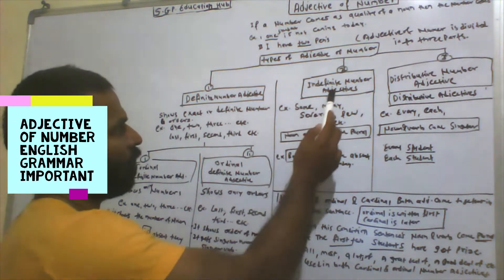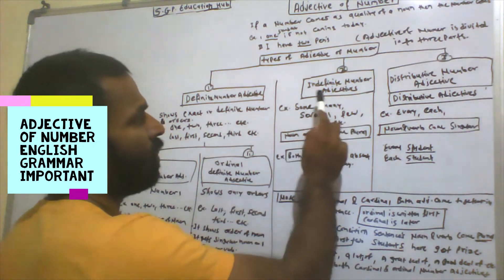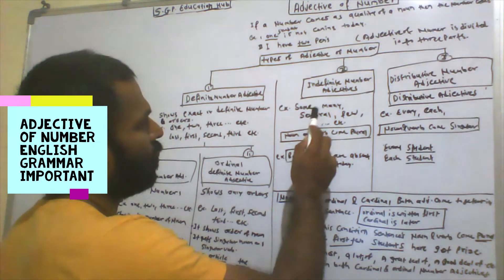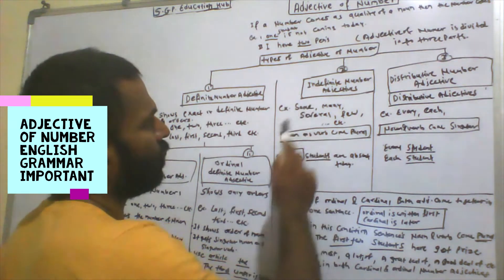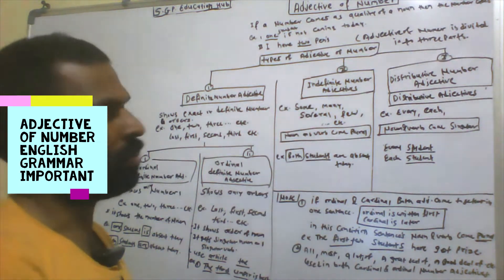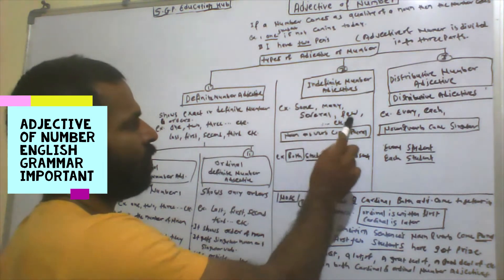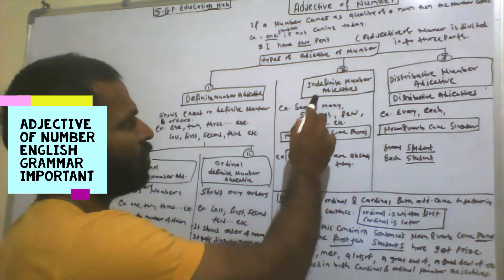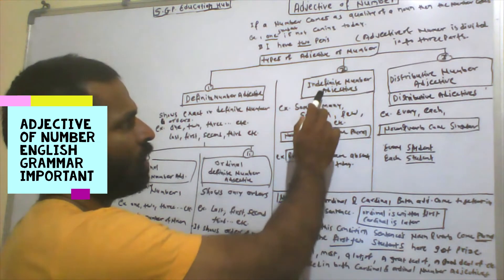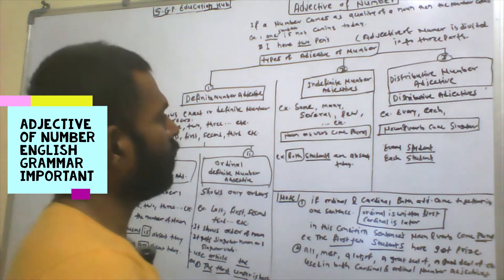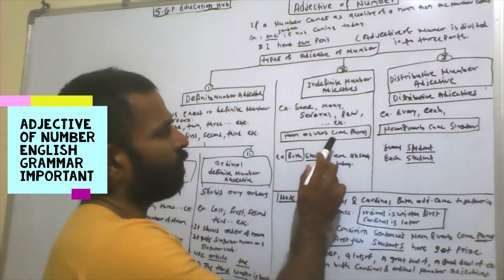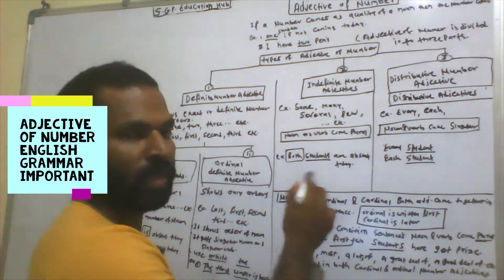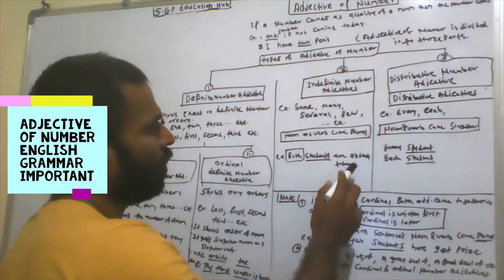The second type of adjective of number is indefinite number adjective. In this type, the noun and verb come in plural. The number is not exactly mentioned. Words like some, many, several, few — these words are related to number but do not give an exact number or order, so they are called indefinite number adjectives. Example: 'Both students are here.' The noun 'students' is plural, and the verb 'are' is also plural.